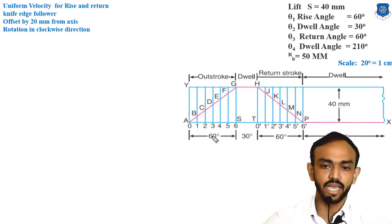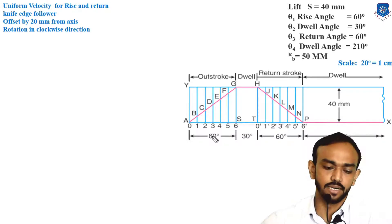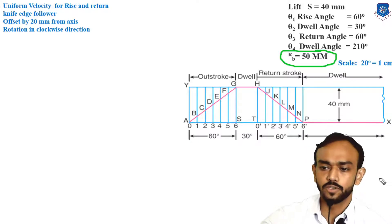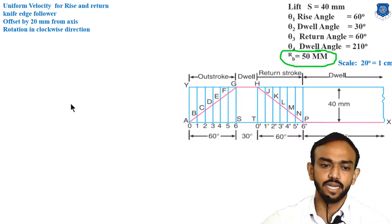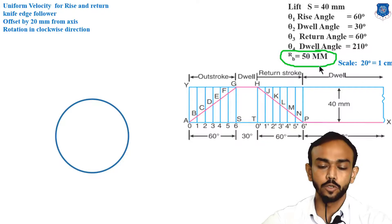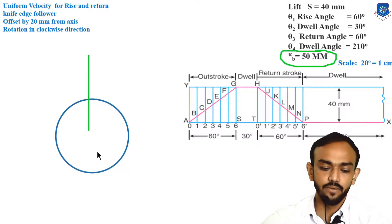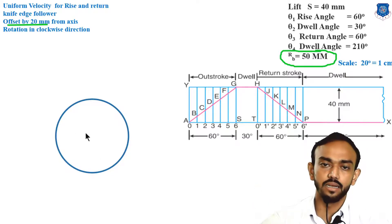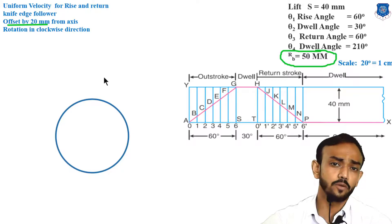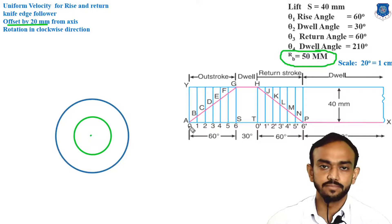Now we are going to start the cam profile. There are very few important points we must consider, otherwise mistakes can happen. First of all, make the base circle with a radius of 5 cm. If offset is not given, we would start with the center line and partition this circle directly. But since offset is given, we are going to make another circle with the same center whose radius equals the offset. The offset is 20 mm, so we make another circle at the center with radius equal to the offset.